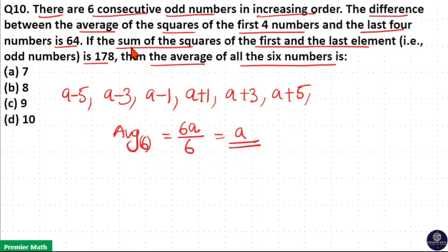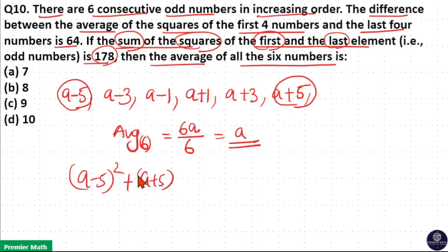And this question says, if the sum of the squares of first and last element is 178. Sum of squares of first and last element. First element is a-5 and last element is a+5. So if I take the sum of the squares of a-5 and a+5, it is 178. So (a-5)² + (a+5)² = 178.